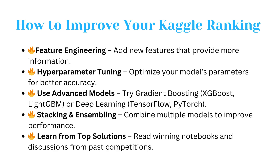Once you have made a submission, how do you improve your score? You can add new features that provide more information, and use hyperparameter tuning to optimize your model's parameters for better accuracy. You can also try advanced models such as XGBoost, LightGBM, or deep learning models like TensorFlow or PyTorch. Additionally, combining multiple models improves performance, and you can learn from top solutions by reading winning notebooks and discussions from past competitions.